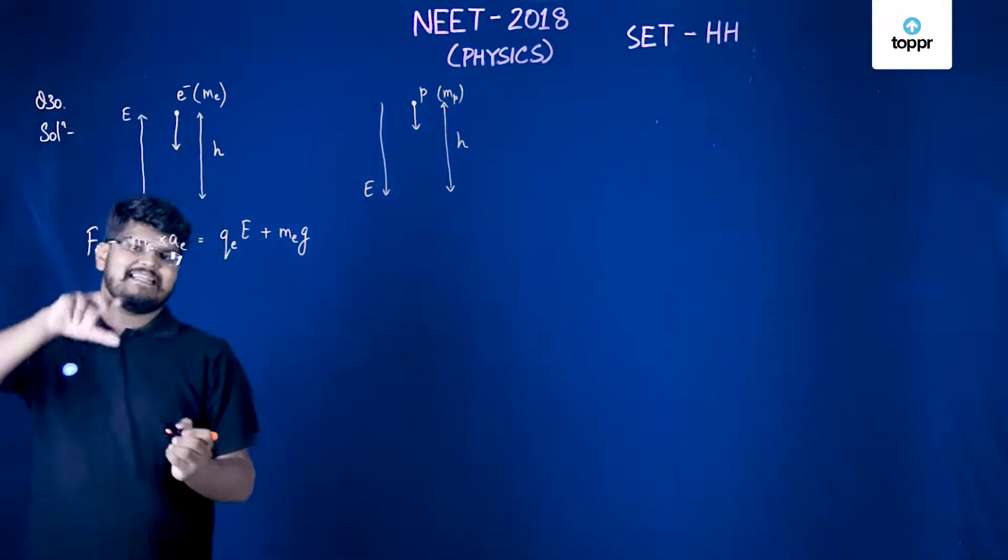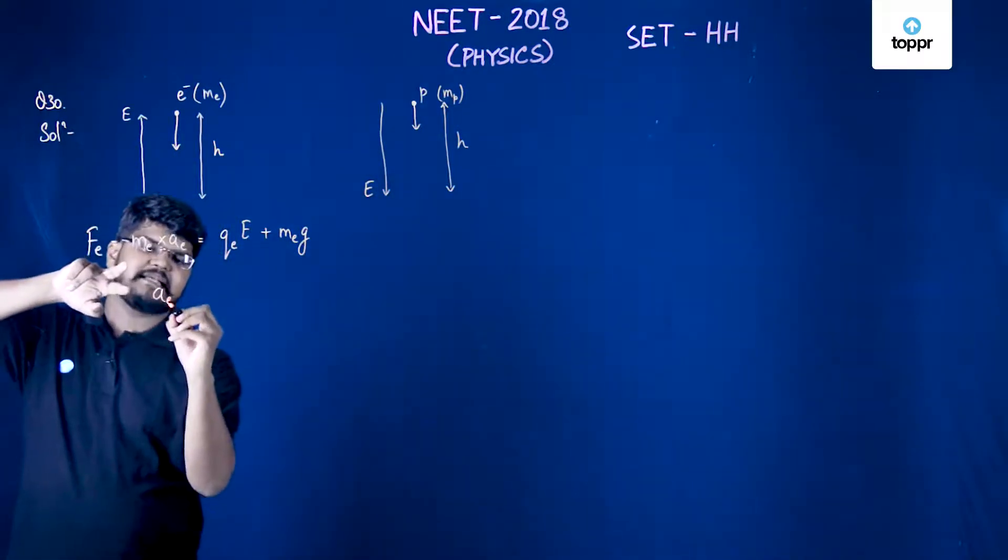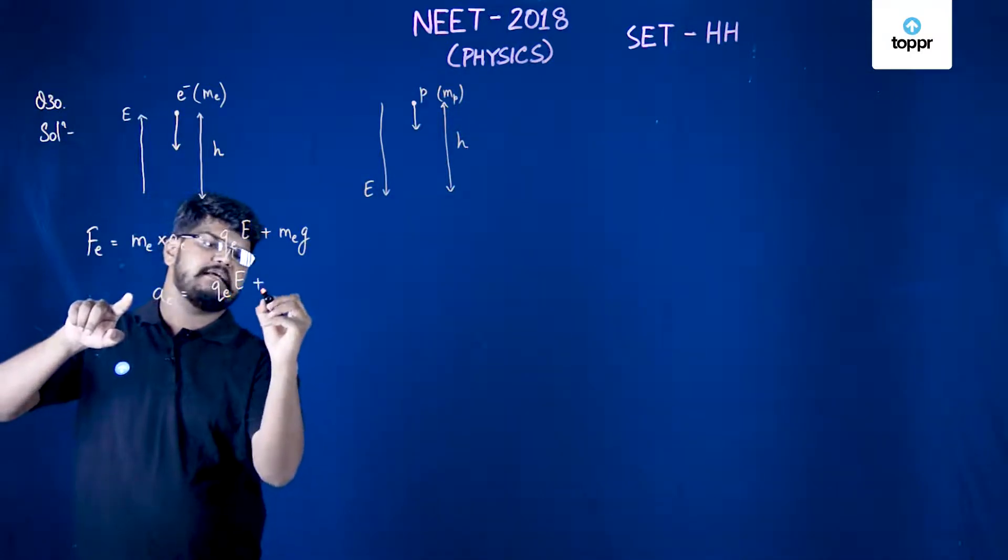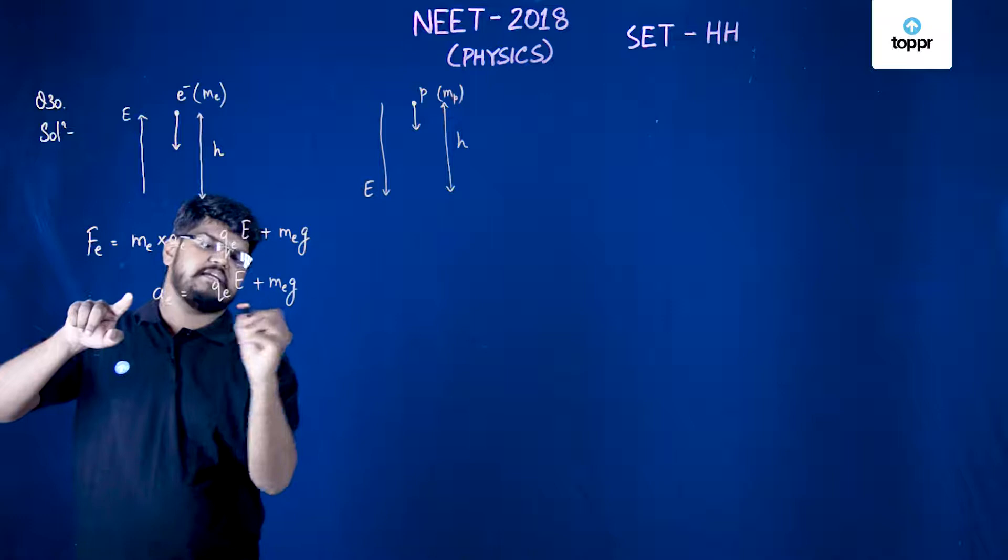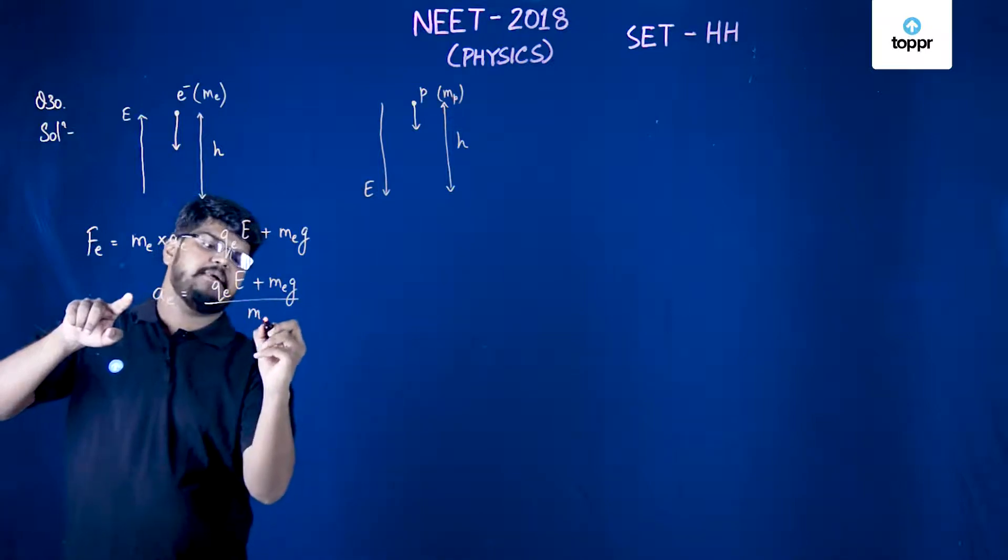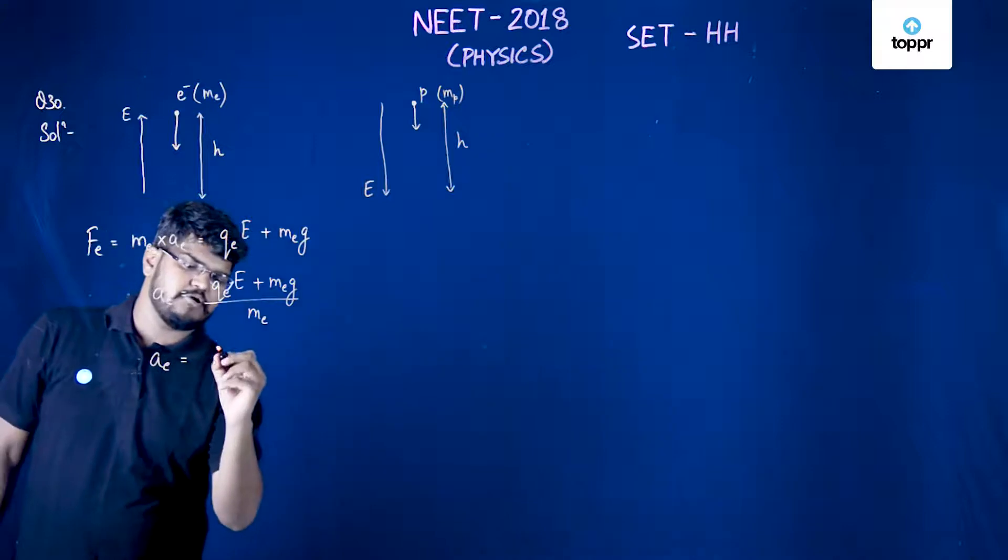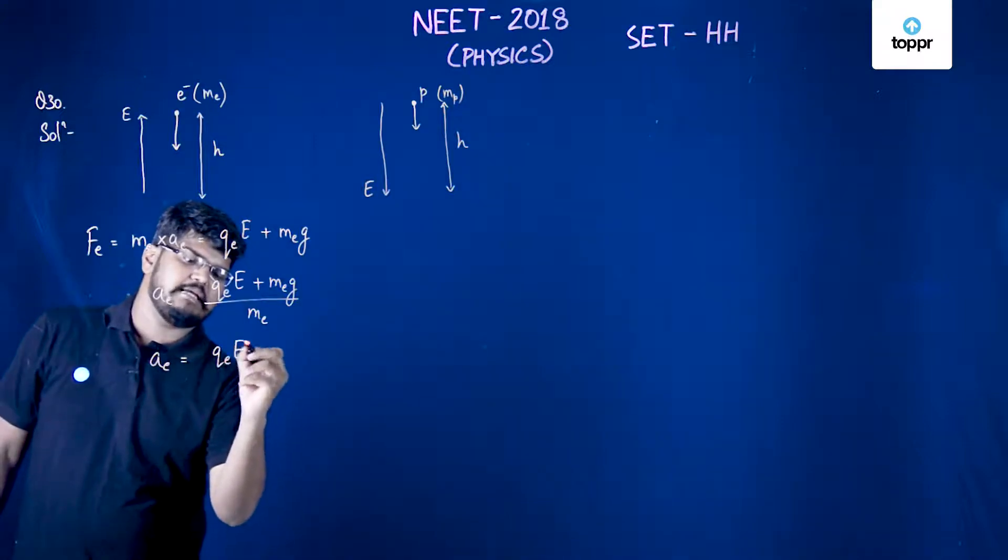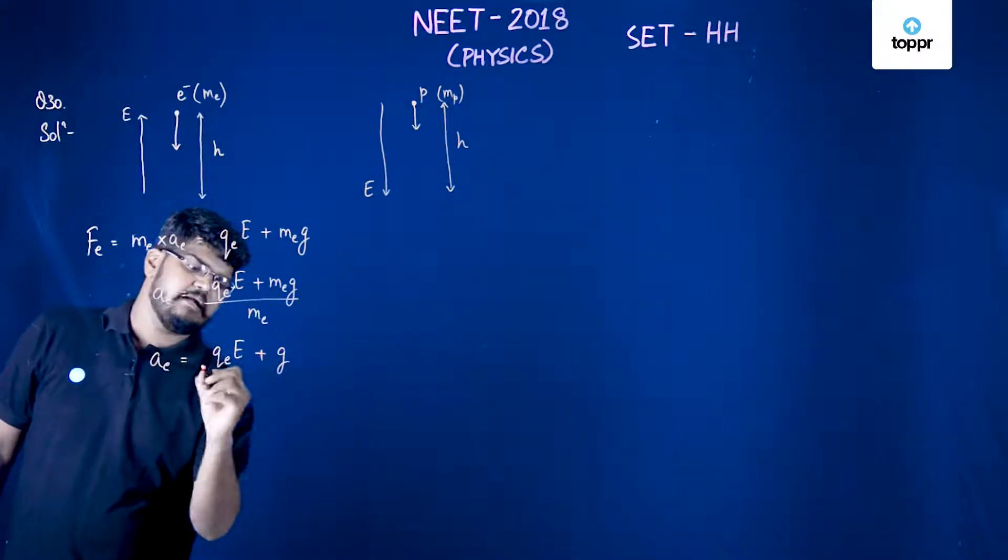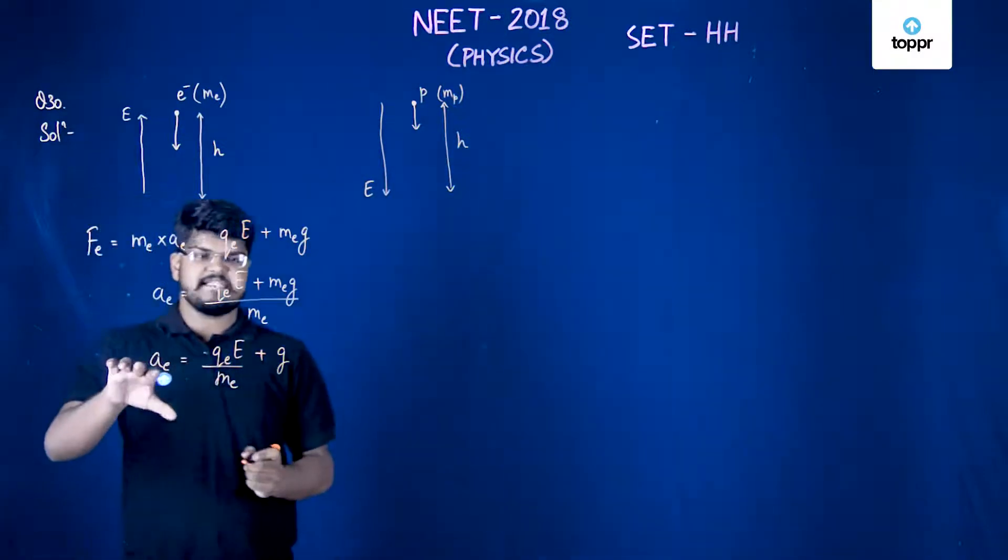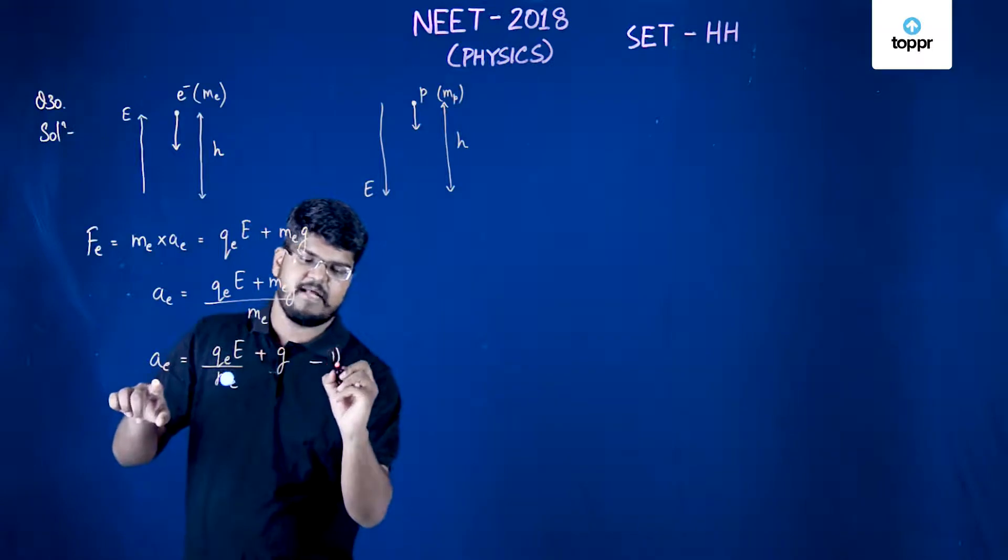The acceleration of the electron, AE, will be equal to QE*E plus ME*G upon ME. Or I can say that AE will actually be equal to QE*E plus G, and this entire value will be divided by ME. So this is the acceleration of the electron—let's say this is equation one.